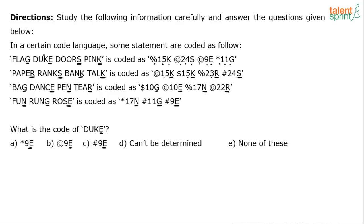But since the word Duke is in the first statement here, its code should also be there in the first statement. And the only code which has got E in it in the first statement is copyright 9E. So I can straight away link Duke to copyright 9E. My answer is option B.